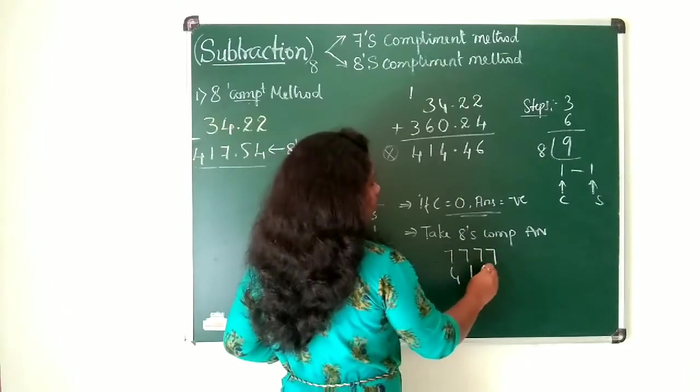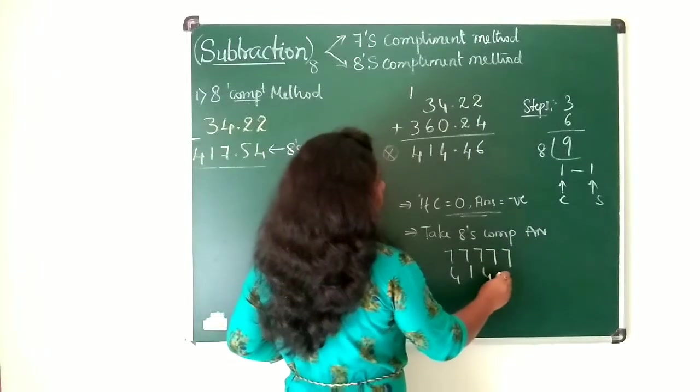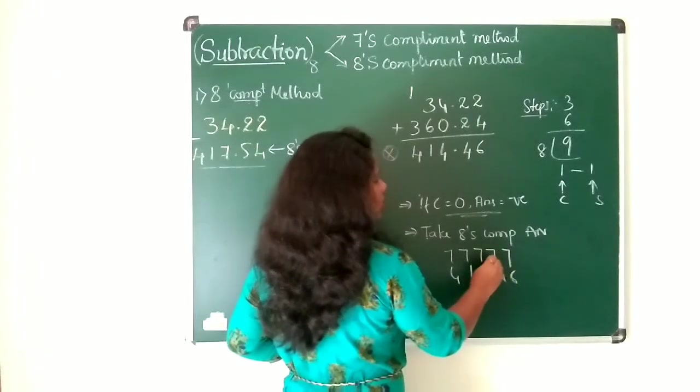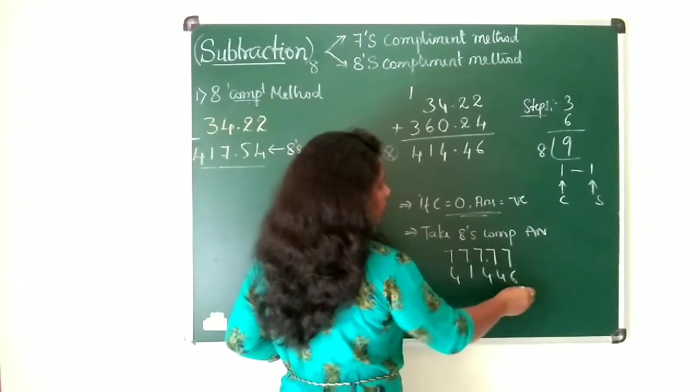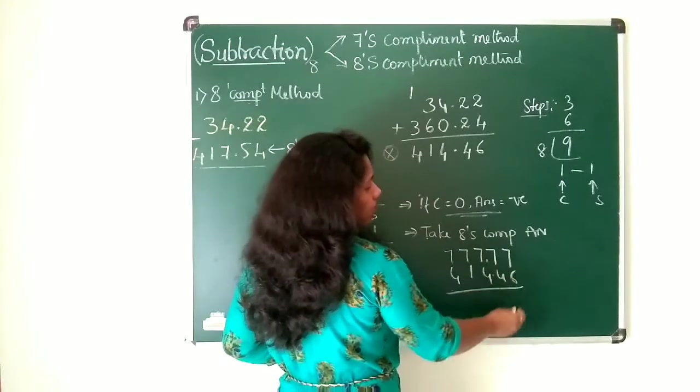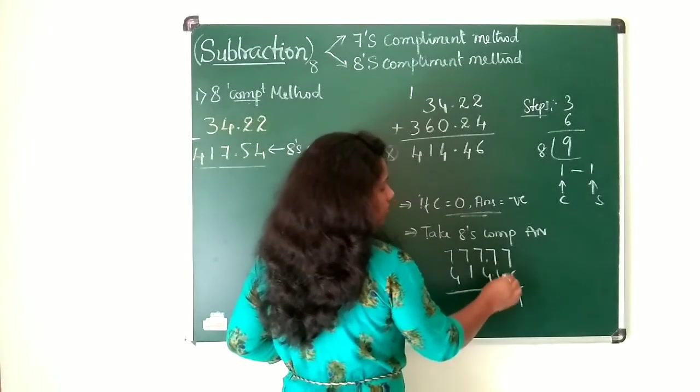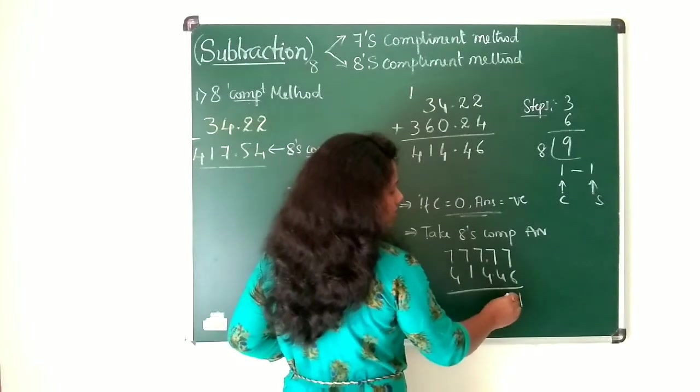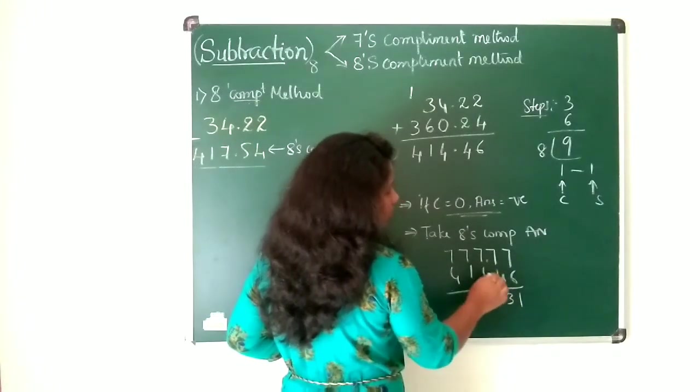414.46. You retain the radix point as it is. 7 minus 6 is 1, 7 minus 4 is 3, 7 minus 4 is 3.